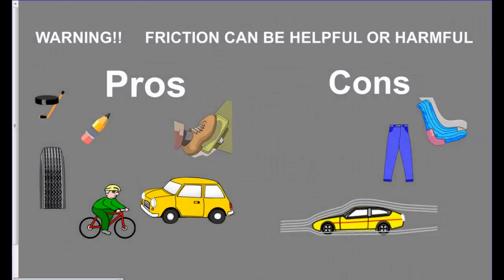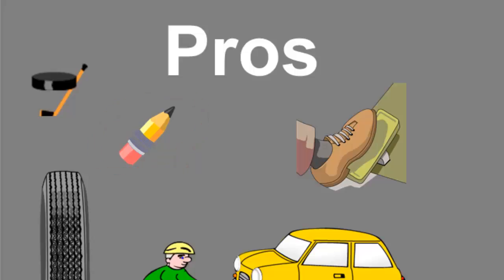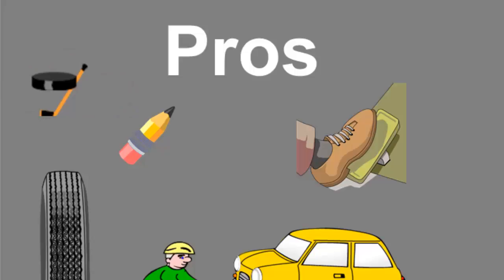Friction can be helpful or harmful. On the helpful side: when writing with a pencil, friction helps the graphite grip the paper; in ice skating or hockey, a small amount of friction between the blade and ice lets you stop; and car treads rely on friction to grip the road and allow braking. Bikes also need friction to ride. On the harmful side, parts rubbing against each other in an engine or a bike chain rubbing on metal can cause damage.